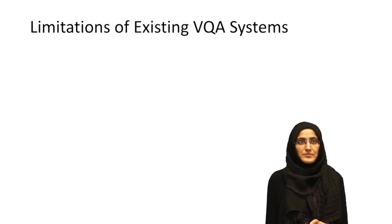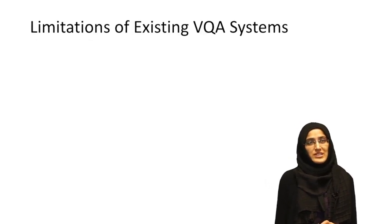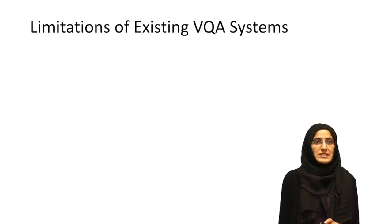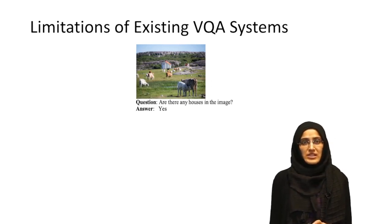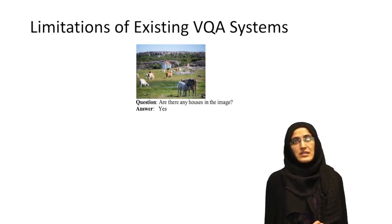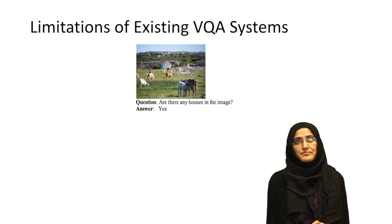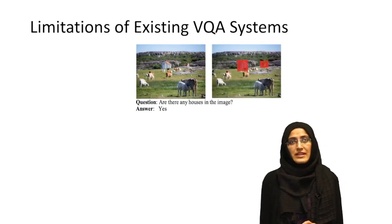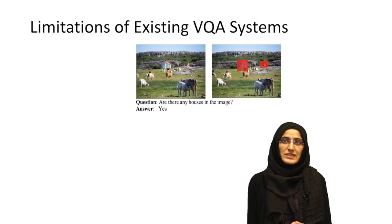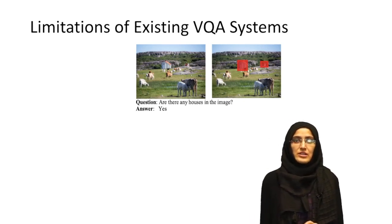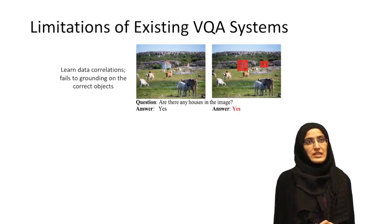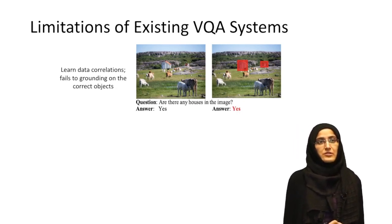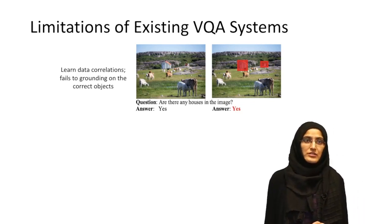Why is this important? There are some limitations of existing VQA systems. For instance, the question is: are there any houses in the image? We can see there is a house, and the VQA system says yes. Then in this image, we mask out the houses and ask the question again, and the model again says yes. So the model is basically learning the answer using data correlation — it is failing to ground on the correct objects.